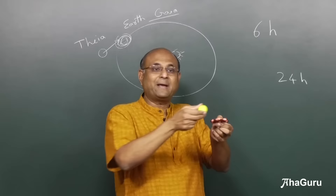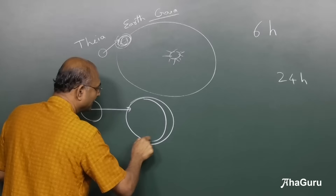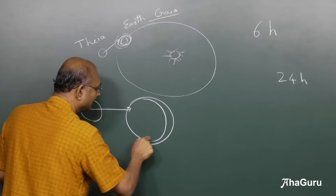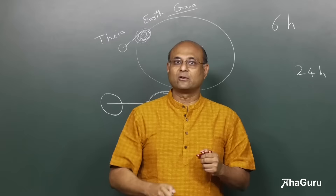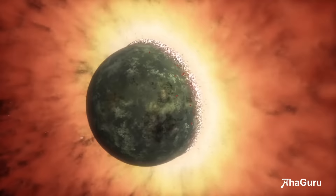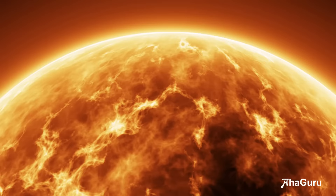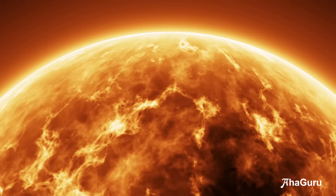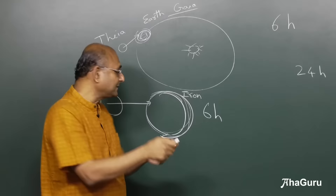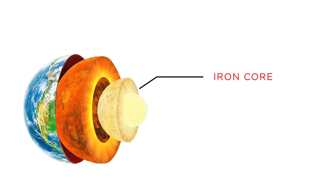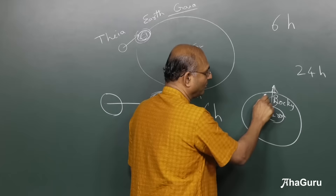So when Theia came and hit Gaia, the combined Earth started spinning really fast — one full rotation every 6 hours. Day plus night was only 6 hours at that time. The collision was so strong it melted the whole Earth into liquid, and the iron particles at the surface started sinking, giving us the iron core we have today. The heat generated then is still with us, which is why we have volcanoes and hot lava inside the Earth.